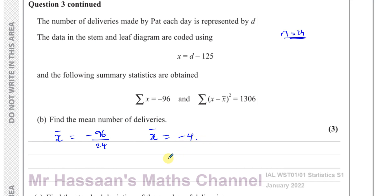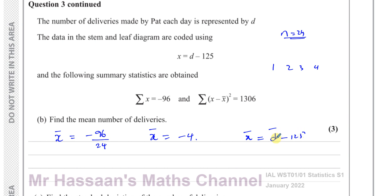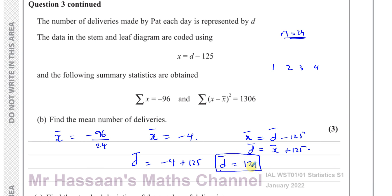That's the coded mean. Now, the mean is affected by the coding. For example, if you take values 1, 2, 3, 4 and add something to each, the mean changes accordingly. Since the coding subtracts 125, to find the actual mean D-bar, I need to undo the coding: D-bar equals X-bar plus 125. So that's minus 4 plus 125, which gives an actual mean of 121. That's the mean number of deliveries. The coding affects the mean, so we have to deal with that.